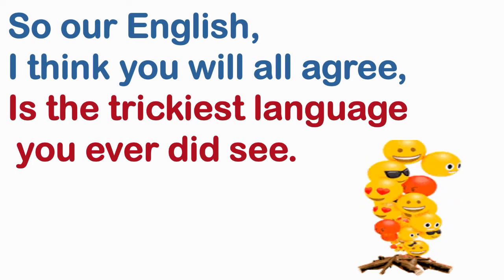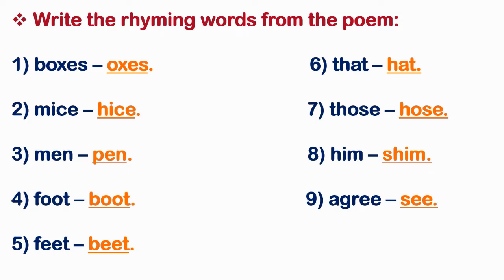You would have observed that each and every stanza of a poem has rhyming words. Now let us see the rhyming words from the poem: boxes–oxes, mice–heist, men–pen, foot–boot, feet–beat, that–hat, those–hose, him–shim, agree–see.